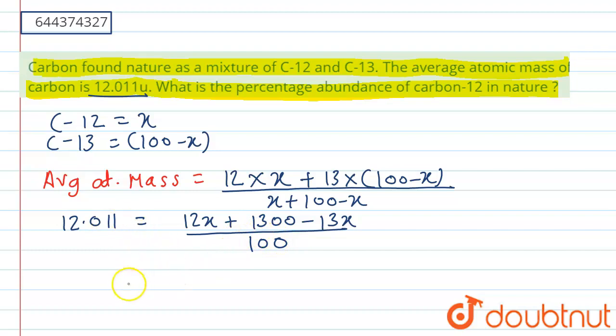If we multiply by 100, on solving this we get negative x plus 1300 equals 1201.1. So we get x equals 1300 minus 1201.1, which gives x equals 98.9.